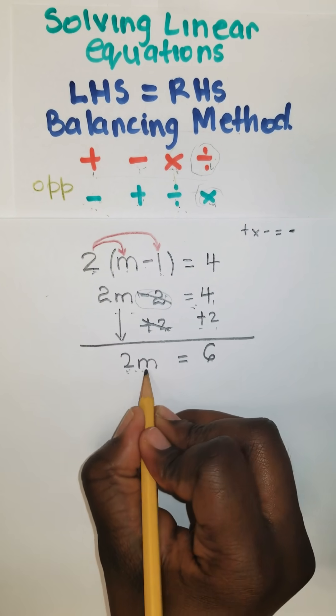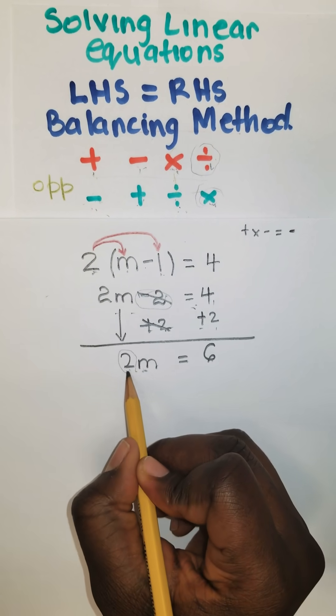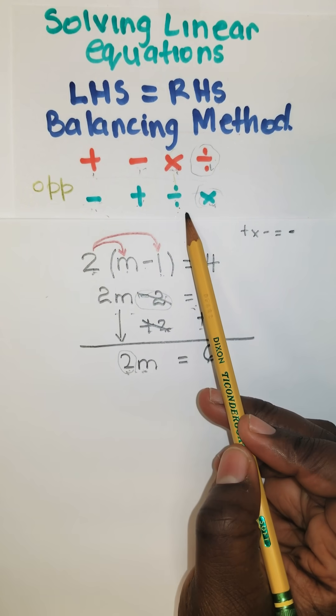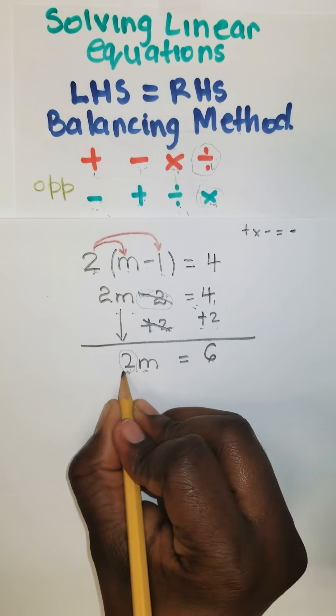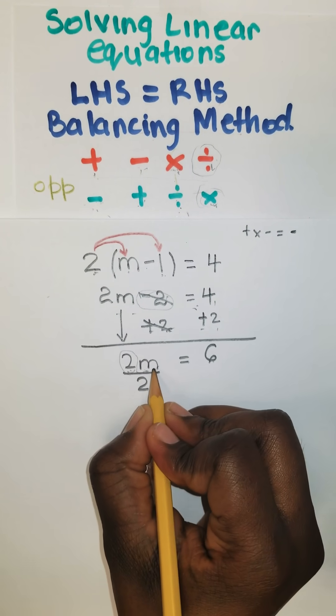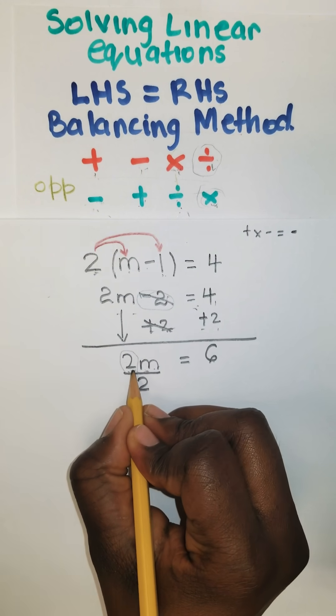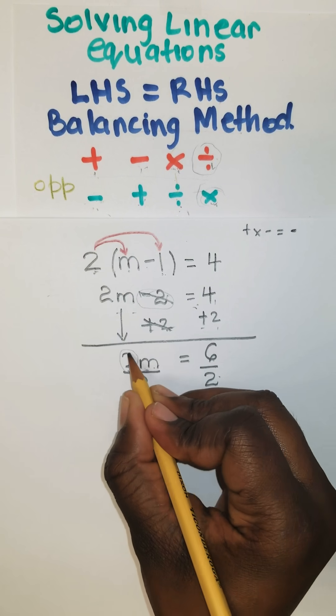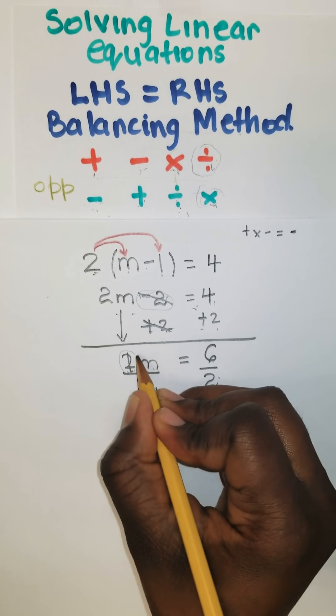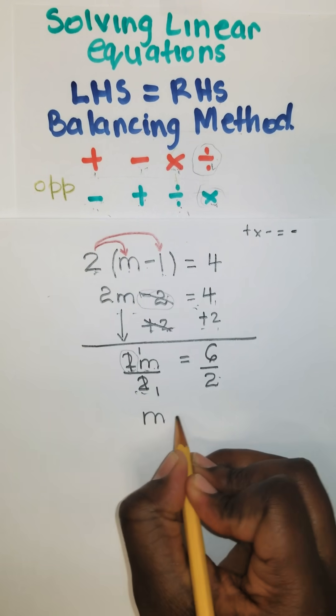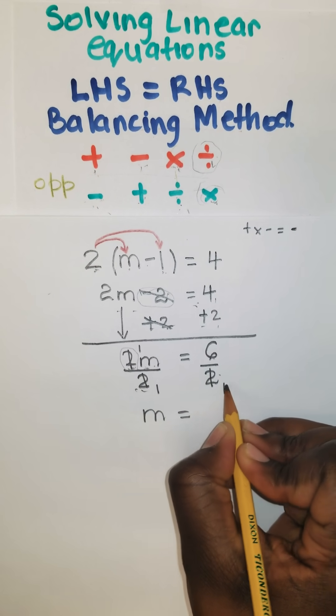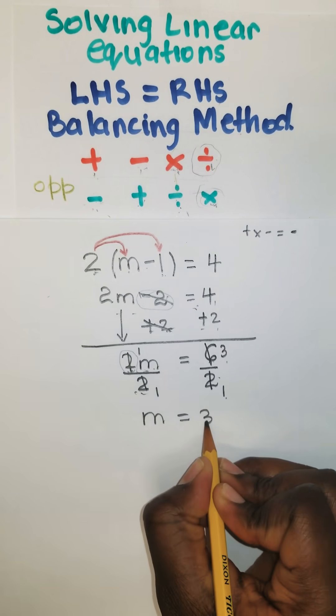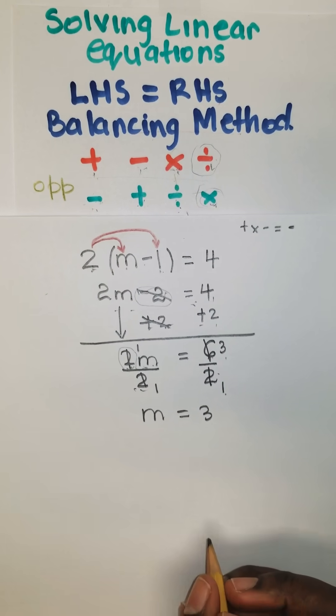So 2m is equal to 6. Do the opposite operation of these two, and this is called the coefficient. So it's multiplying, so the opposite is division. We'll divide by the number in front of the variable, which is known as the coefficient, which is 2, on both sides. So this 2 cancels this one. So m is equal to, when 2 goes 1 time into 6 goes 3 times. 3 over 1, which is the same thing as saying 3.